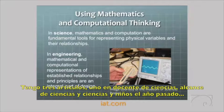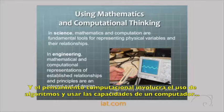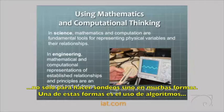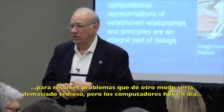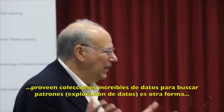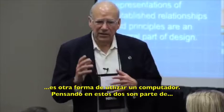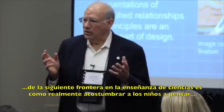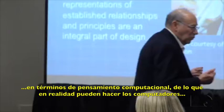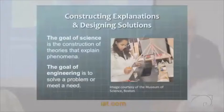Using mathematics and computational thinking — there's a difference between these. Computational thinking involves using algorithms and using the capability of a computer, not just probeware, but in all sorts of ways. One way is to use algorithms to solve problems that would be otherwise too tedious to solve. Computers today also provide incredible collections of data, and mining data is another way of using a computer. That's kind of the next frontier in science education.